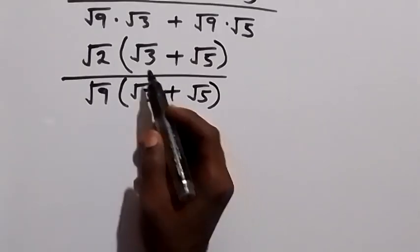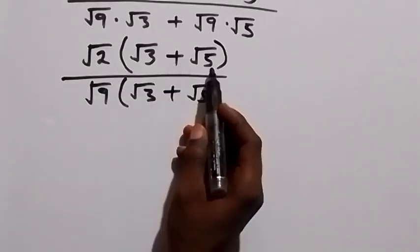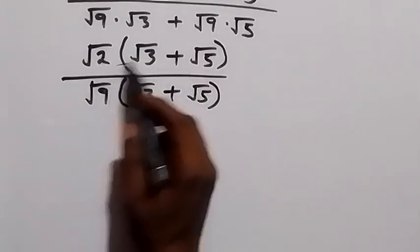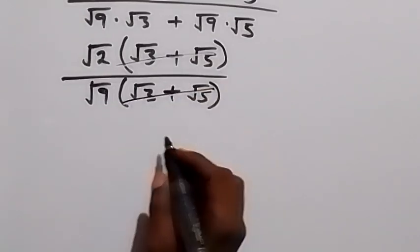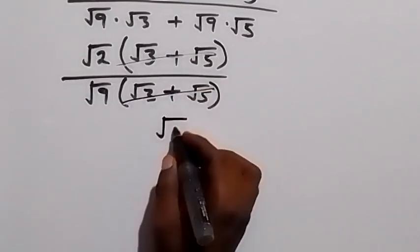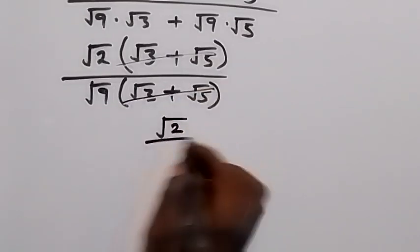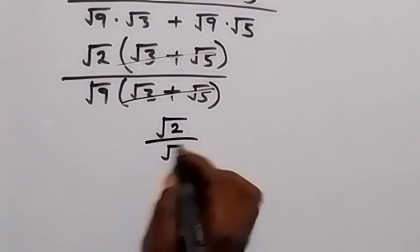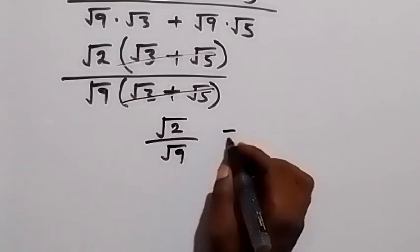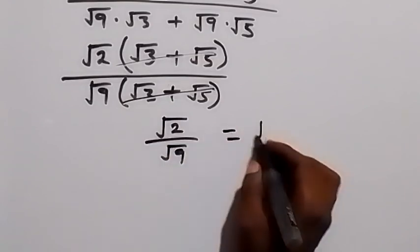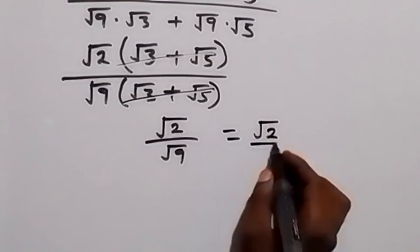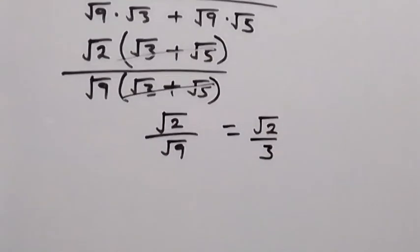We can see that (root 3 plus root 5) appears in both the numerator and denominator, so they cancel out. What is left is root 2 divided by root 9, which is the same as root 2 divided by 3.